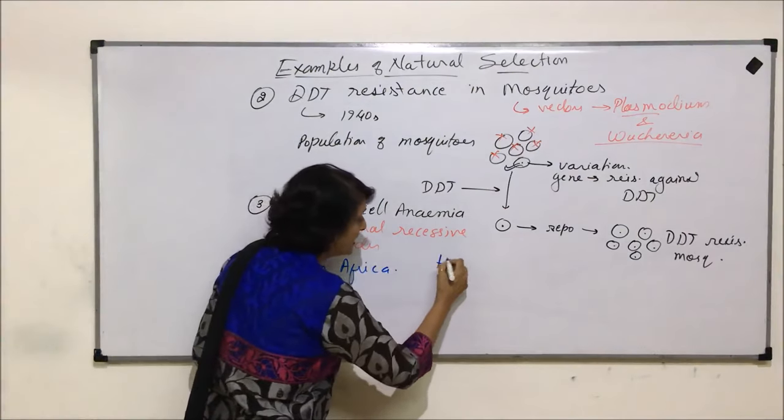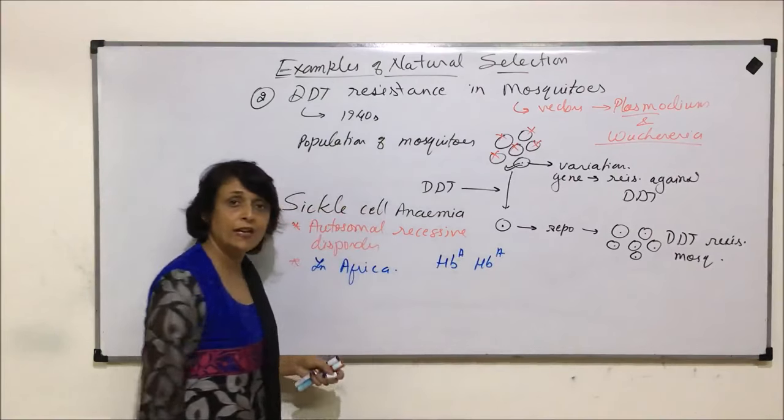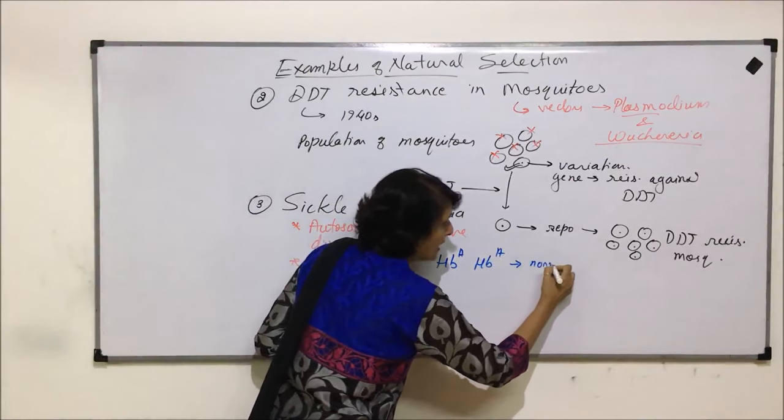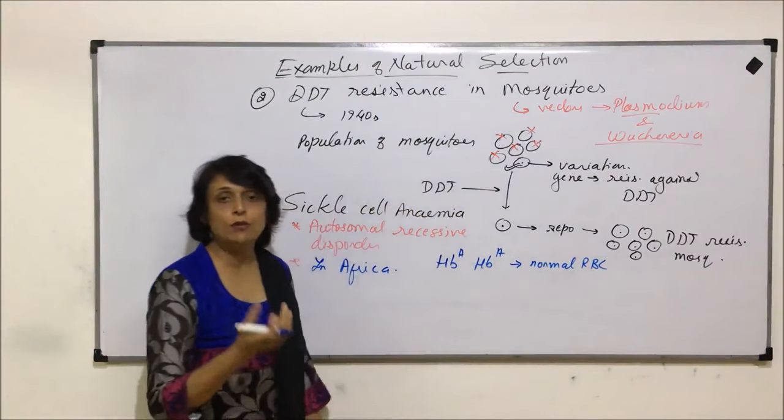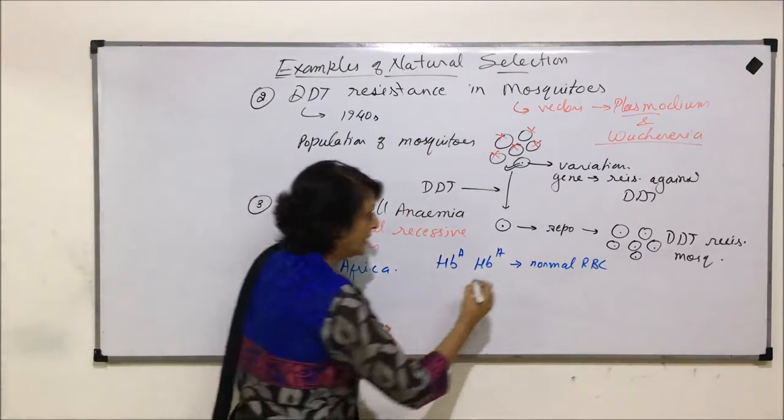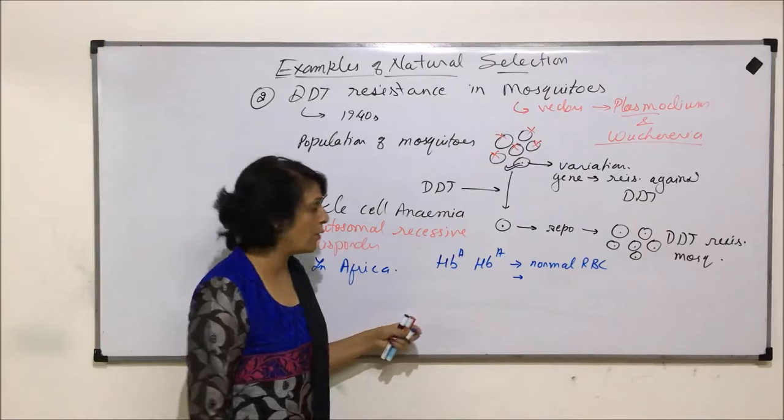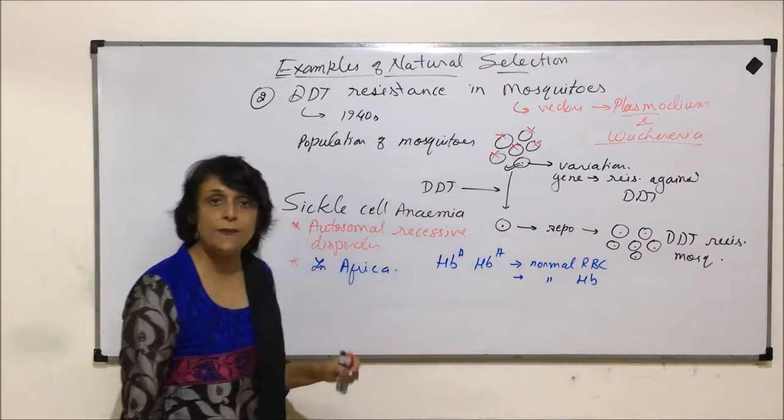There is a gene which is responsible for formation of RBC of a particular shape and structure of hemoglobin. We studied this in genetics chapter under pleiotropy. An individual has HBA/HBA genotype - this is the normal genotype. This person would have normal RBC, the regular disc shaped RBC biconcave, and this individual would also produce normal type of hemoglobin. So, normal hemoglobin and normal RBC.